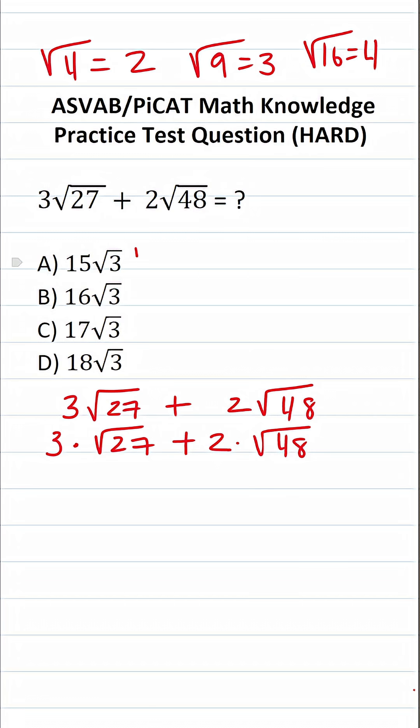Now, let's work on simplifying the square root of 27 as well as the square root of 48. What is 27? 27 is the same thing as 9 times 3. Now, I could break this apart to be the square root of 9 times the square root of 3. The square root of 9, as I just pointed out, is 3. So, this becomes 3 times 3 times the square root of 3. And we could write that as 3 square root of 3.